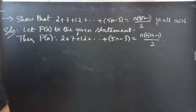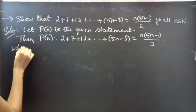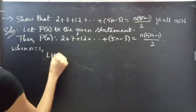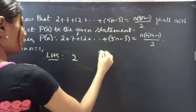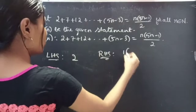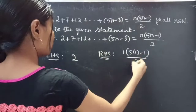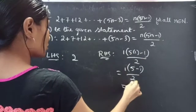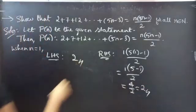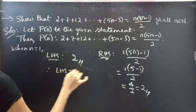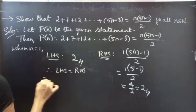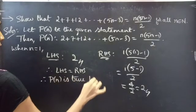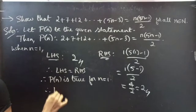So let's prove the statement for n equals 1. When n equals 1, we will take only the first term from LHS, which is 2. Now coming to RHS, put n equals 1: we get 1 times (5 times 1 minus 1) by 2, equals 1 times (5 minus 1) by 2, which is 4 by 2, equals 2. So LHS equals RHS, therefore P(n) is true for n equals 1, which means P(1) is true.